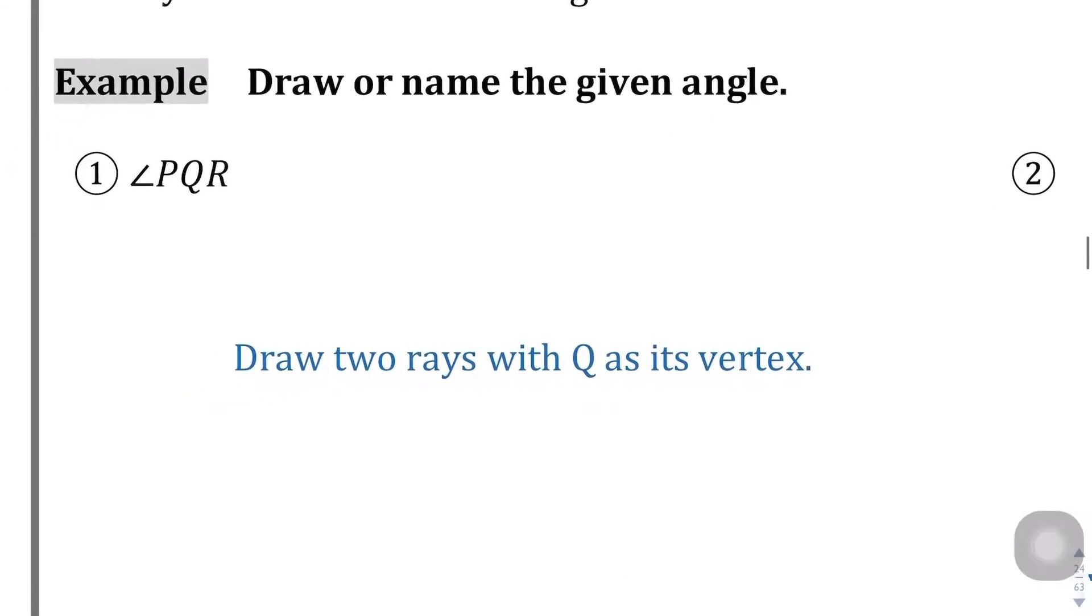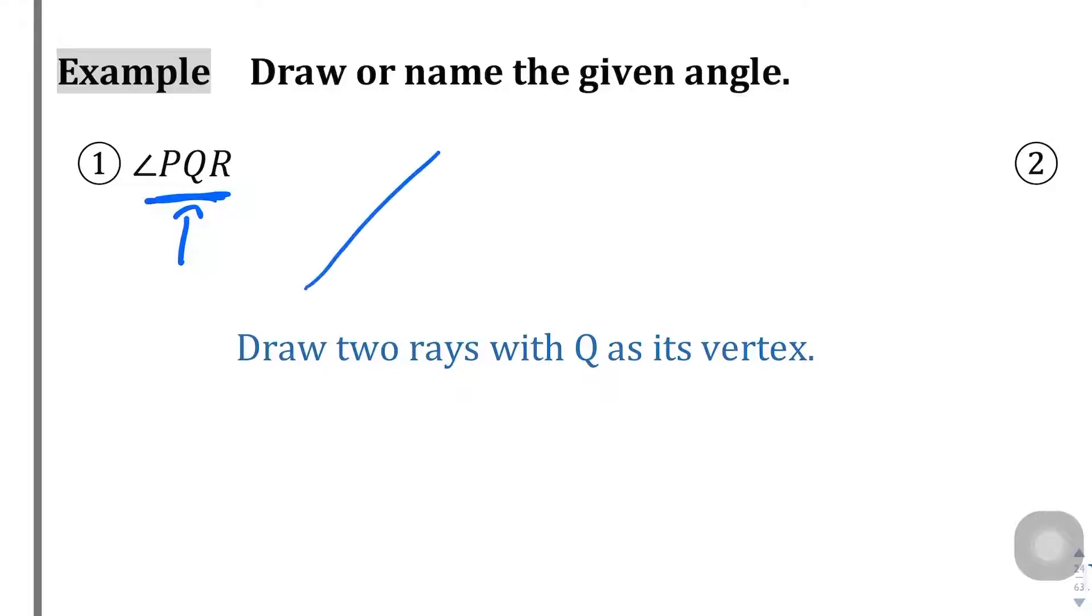For question number 1, they want us to draw two rays with Q as its vertex. The important thing when drawing an angle is that the vertex is at the center of this naming convention: P, Q, R, where Q is in the middle. We draw two rays. There's one ray, here's the second ray, here's Q, and then this can be P, and this could be R.